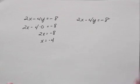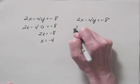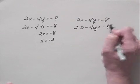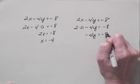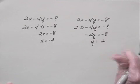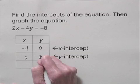Now to find the y-intercept, we let x equal 0 and solve for y. So we have 2 times 0 minus 4 times y equals negative 8. Negative 4 times y equals negative 8. Dividing both sides by negative 4, we have y equals 2. So the y-intercept is 0, 2.